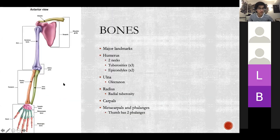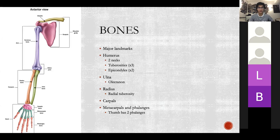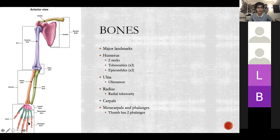For the ulna, you've got your olecranon and the radial tuberosity, which is where the biceps inserts. For carpal bones, I have a mnemonic at the end — the way I remember them is 'straight line to pinky, here comes the thumb.' Your metacarpals and phalanges are easy to remember: just proximal, distal, and middle. Remember that the thumb has two phalanges and they're named one to five.